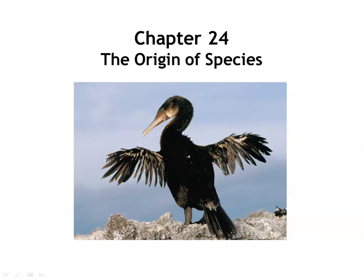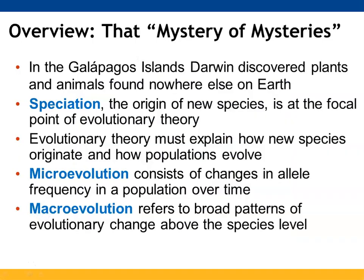This video is going to focus on species and the origin of them. Darwin identified plants and animals that did not exist elsewhere when he visited the Galapagos Islands. Speciation, which is described as the origin of new species, is basically connecting microevolution — the allele changes — to macroevolution, which are broader patterns that we see. Evolutionary theory is going to help us connect those two together and better understand how species can originate and how populations can evolve.